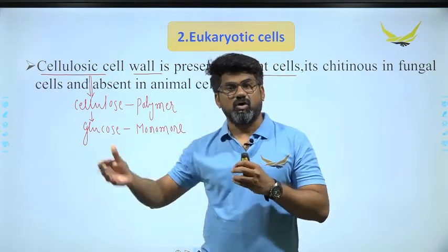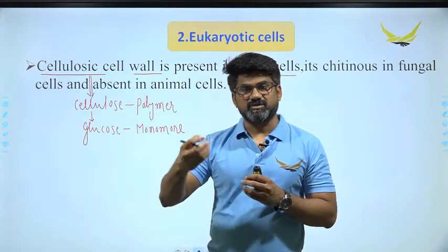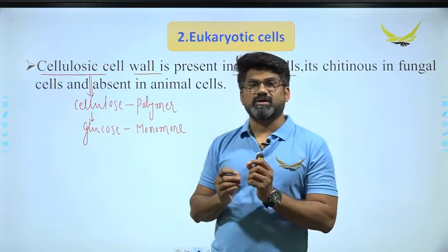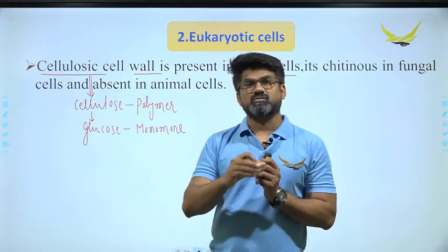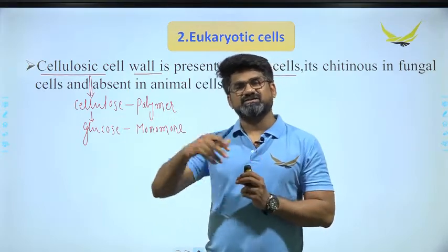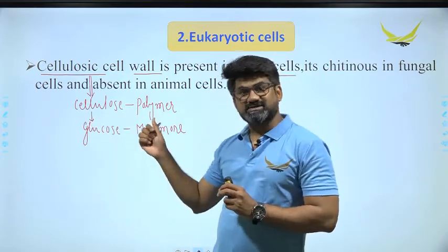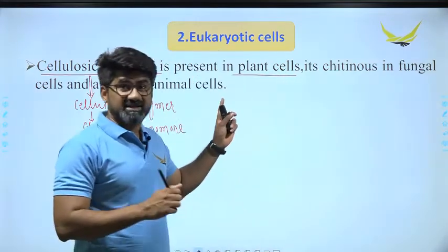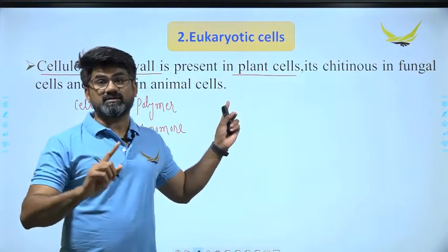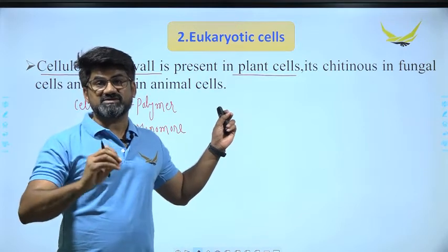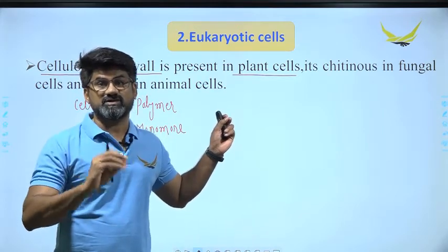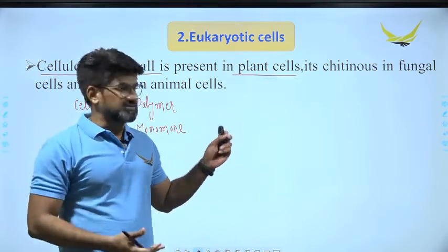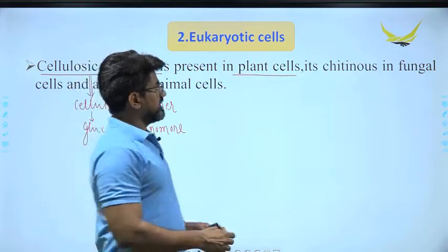There are two kinds of bonds in cellulose that we will discuss in the biomolecules chapter. Cellulose is made up of glucose monomers; starch is also made up of glucose monomers but there are some differences we will discuss later. In plants, the main substance forming the cell wall is cellulose, though other substances like suberin and lignin are also deposited.